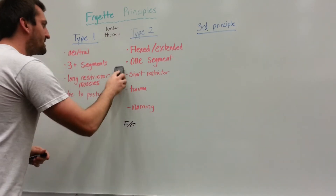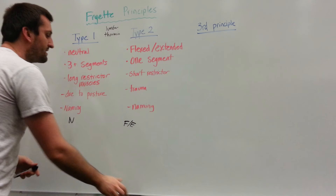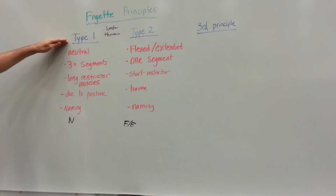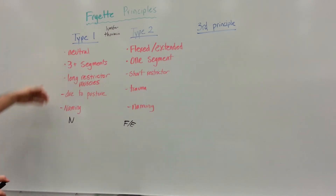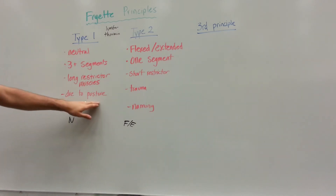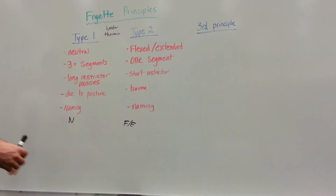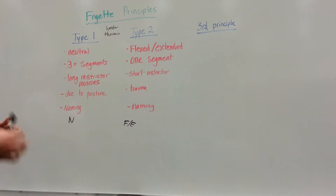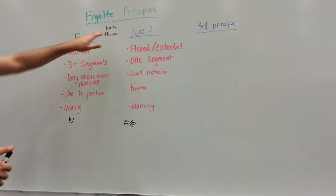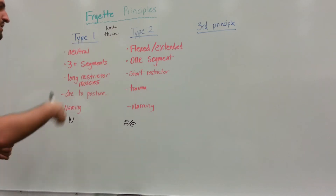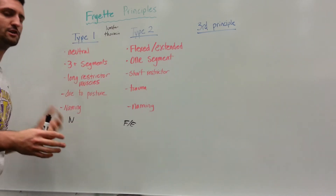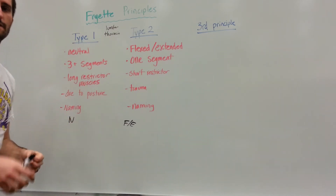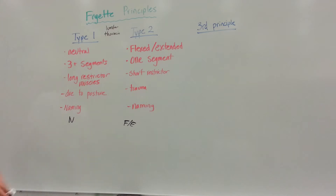What actually causes each somatic dysfunction? Type 1s involving three or more segments are caused by posture — bad posture, bad gravitational loading upon the spine. Type 2s, on the other hand, are going to be more point traumas; they're going to be due to injuries of some sort.